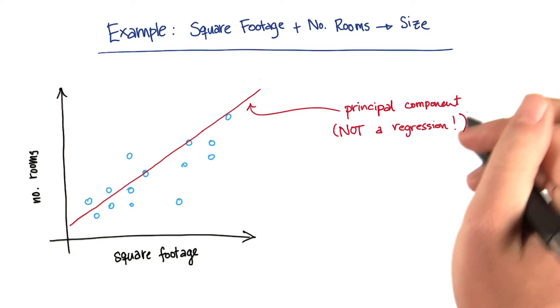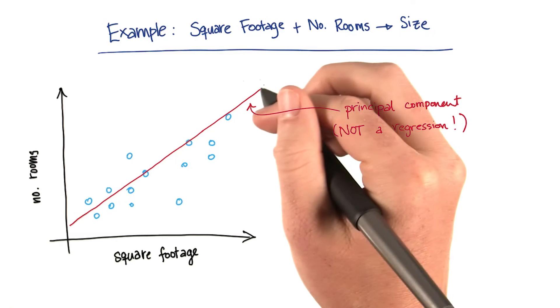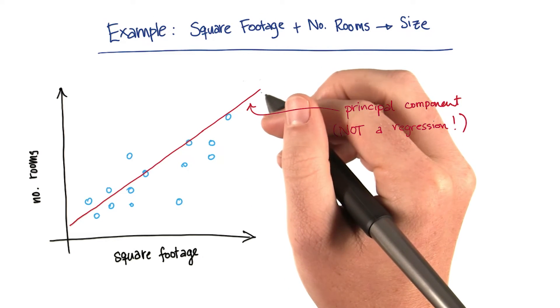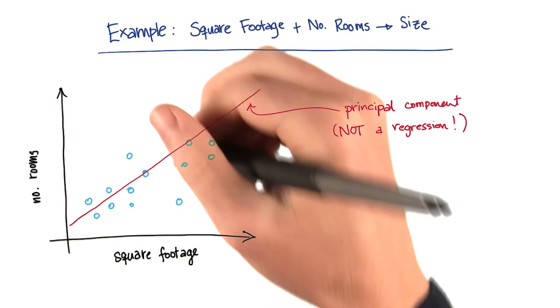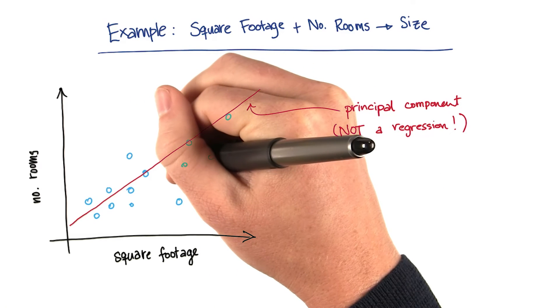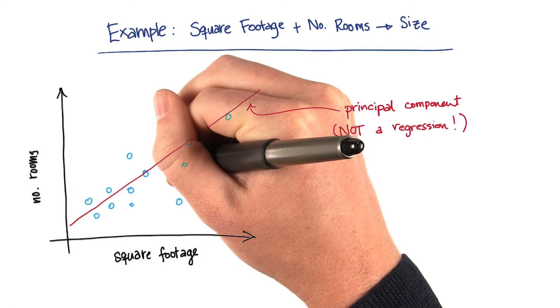So here's what that means. Once I've found my principal component, once I have the direction of this vector, of this line, just go with me for now that it exists. We'll come back to how we find it in a little bit. Then what I'm going to do is I'm going to take all of my data points, and I'm going to go through a process that's called projection.